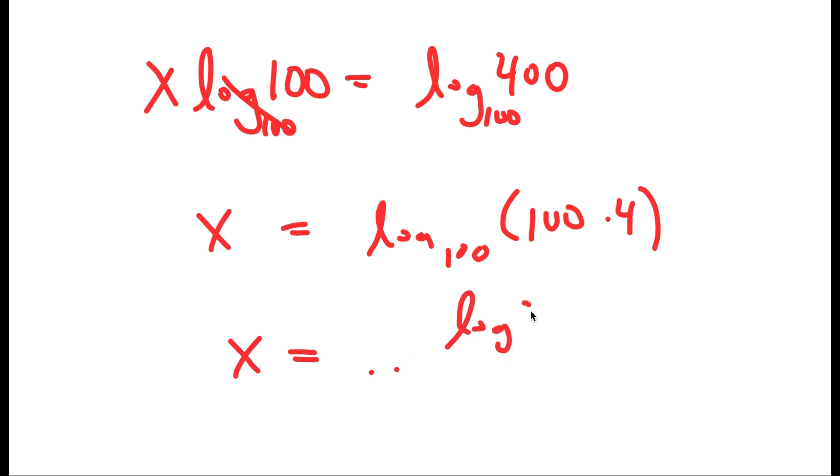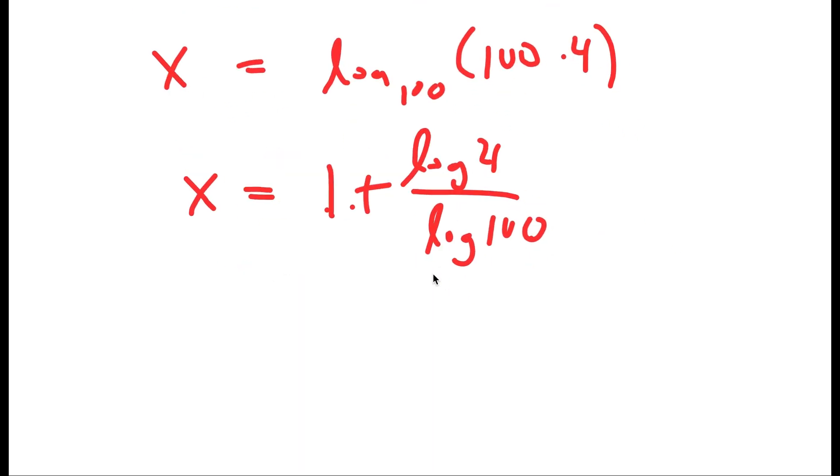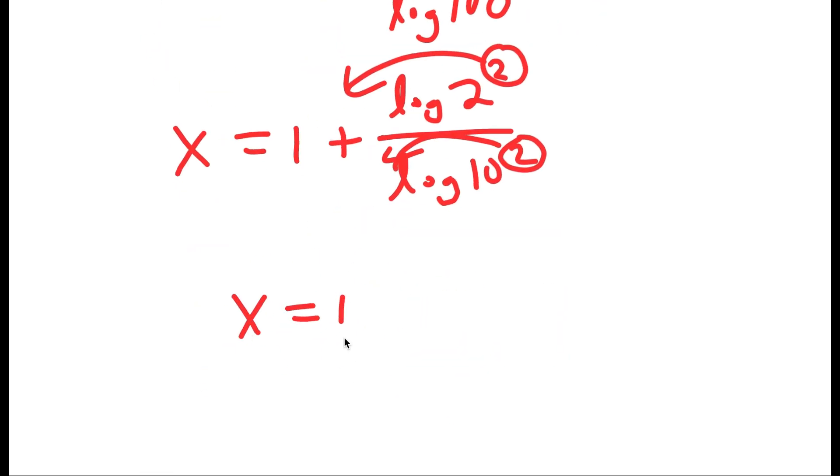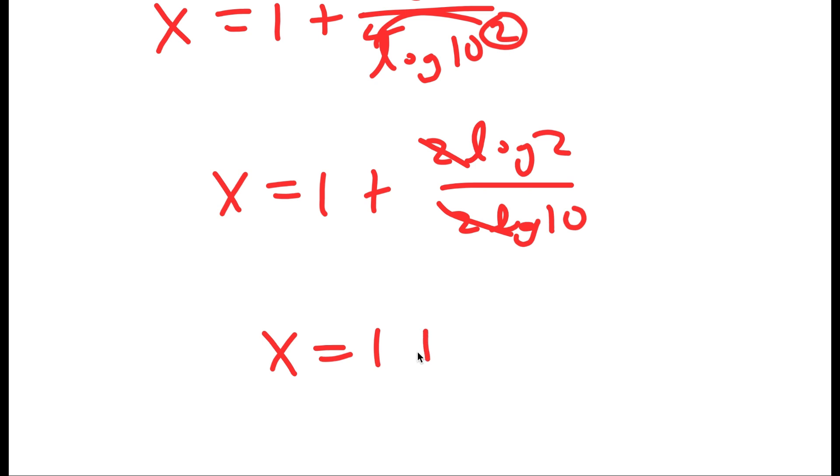log of 4 over log 100. Log of 4 is the same thing as log of 2 squared, and log of 100 is the same thing as log of 10 squared. So I can move the 2 to the front and the 2 to the front over here, so I get x is equal to 1 plus 2 log 2 over 2 log 10. These two cancel out, so I get x is equal to 1 plus log 2 over log 10.